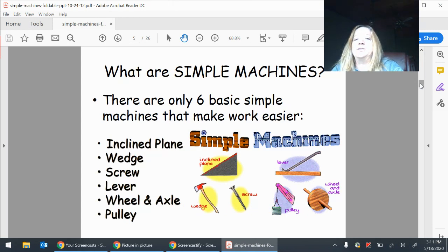What are simple machines? There are only six basic simple machines that make work easier: the inclined plane, the wedge, the screw, the lever, the wheel and axle, and the pulley.